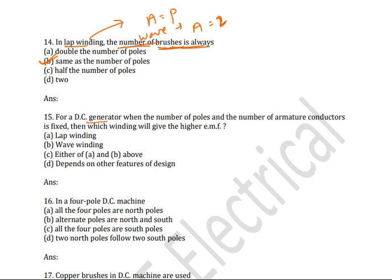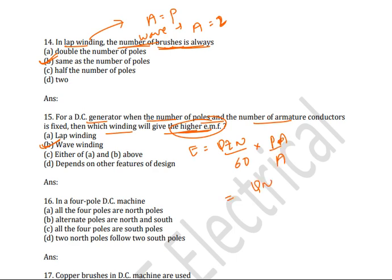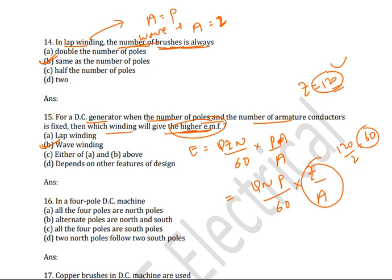Next question: for DC generators, when the number of poles and number of armature conductors is fixed, which winding gives the highest EMF? The correct answer is wave winding — in wave winding, the induced EMF generated is maximum. From the formula E = φZN/60 × P/A, we focus on Z/A. For wave winding, A = 2, so Z/A = 120/2 = 60. For lap winding with 4 poles, Z/A = 120/4 = 30 — a smaller value. So wave winding gives the highest induced EMF.